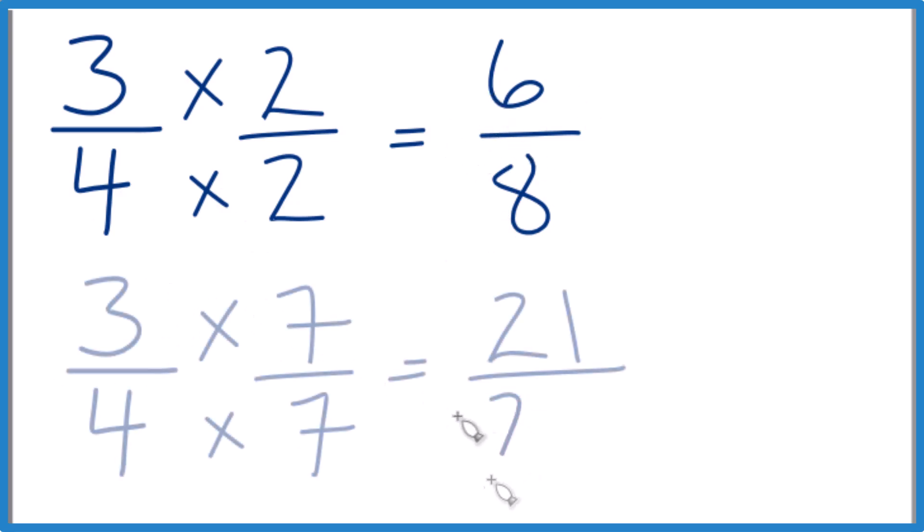Then I did this. Here I used 7 over 7. I was feeling a little crazy. But 21, 28, that's an equivalent fraction to three-fourths. Both of them are equal to 0.75.